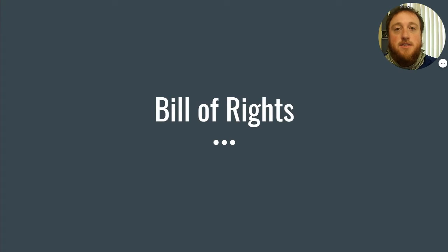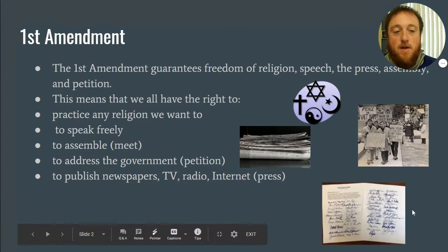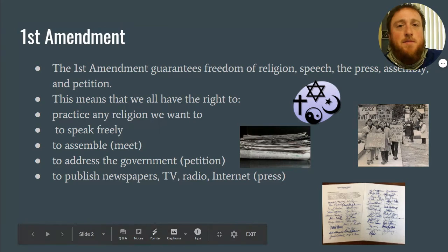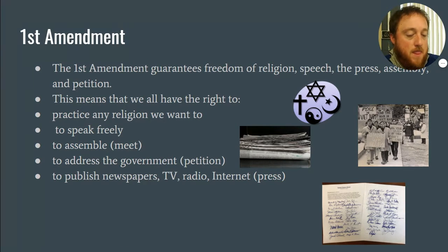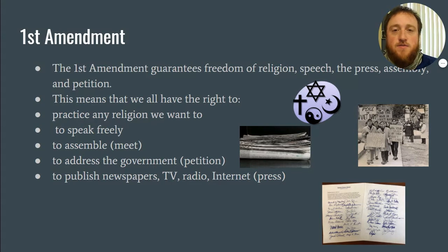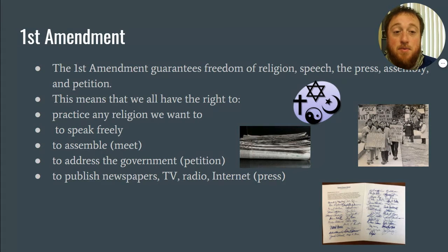So let's talk about what each of these actually are. The first amendment is kind of the more important one when it comes to federal government protections. There are five different parts to the first amendment: freedom of religion, freedom of speech, the press, assembly, and petition.